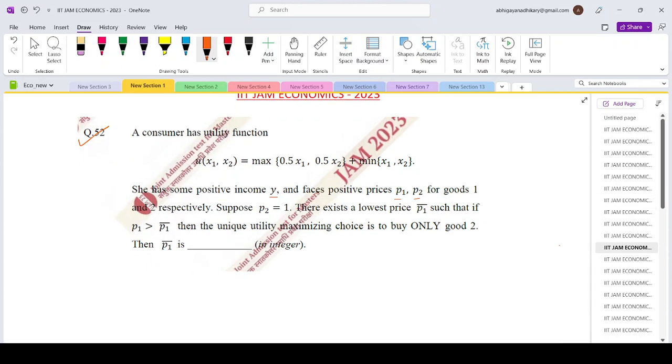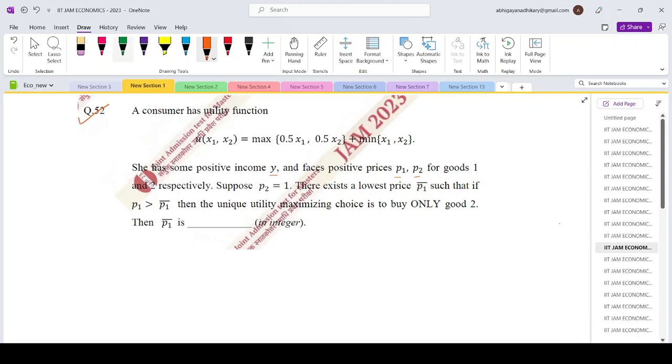There exists a lowest price p₁ bar such that if p₁ greater than p₁ bar, then the unique utility maximizing choice is to buy only good 2. Then p₁ bar is what in integer.